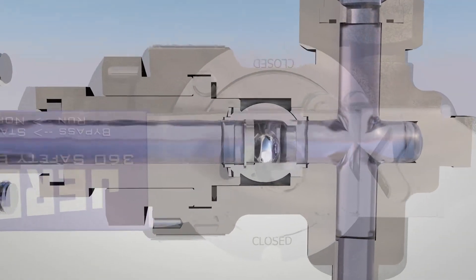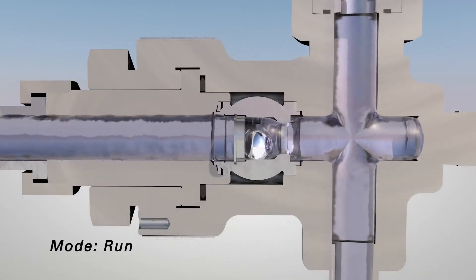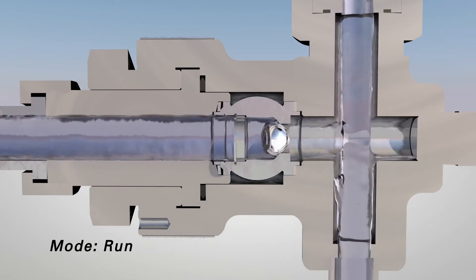If your level gauge is not maintained properly or a leak occurs, the ball check will engage and isolate the gauge from the vessel.